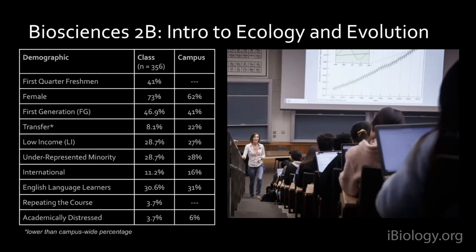The demographics of the class closely follow the demographics of the university with a couple of exceptions. Campus as a whole skews slightly female, and this class skews even more female. The most noticeable difference is that we have less than half the number of transfer students, because this course serves as the intro biology course for majors in the College of Biological Sciences and the College of Agriculture and Environmental Studies, which requires incoming transfer students to have completed the intro bio series already.